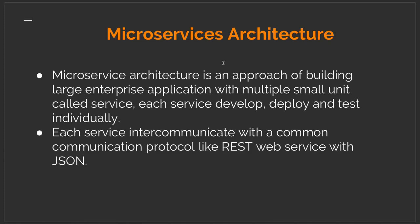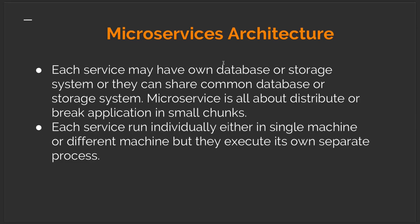Microservice architecture is an approach to building large enterprise applications with multiple small units called services. Services are deployed, tested, and executed independently, each exposing data accessible by other services. Inter-service communication can happen through different protocols — REST, SOAP, GraphQL, gRPC, or a publisher-subscriber mechanism. Each service may have its own database, and each service runs individually in a single machine, container, pod, Docker container, ECS instance, or EC2 instance.